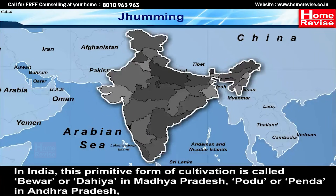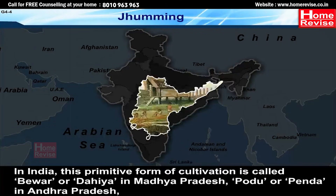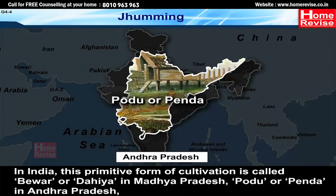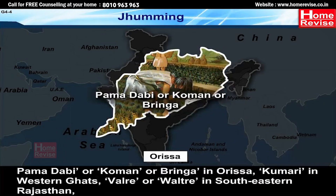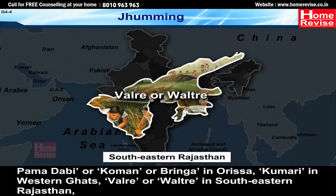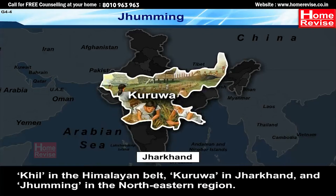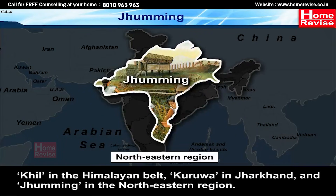In India, this primitive form of cultivation is called Bewar or Dahiya in Madhya Pradesh; Podu or Penda in Andhra Pradesh; Pamlou, Koman or Bringa in Odisha; Kumari in Western Ghats; Valre or Valtre in South-Eastern Rajasthan; Khil in the Himalayan Belt; Kuruwa in Jharkhand; and Jhuming in the North-Eastern Region.